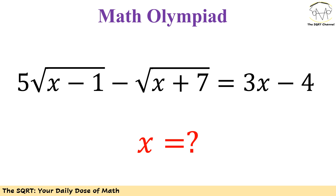We have 5 times radical(x minus 1) minus radical(x plus 7) equals 3 times (x minus 4), and we need to find the values of x that satisfy this equation. Take your time, try to solve this problem and I'm going to see you in a bit.